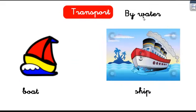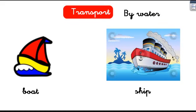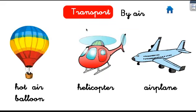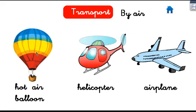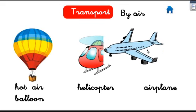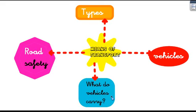We also have transport by water — the small boats and the big ships. These types of transport use petrol too, so they pollute. And transport by air: we have the hot air balloons, the helicopters, and the airplanes. Which of these three do you think is the fastest? Yes, the airplane is the fastest.